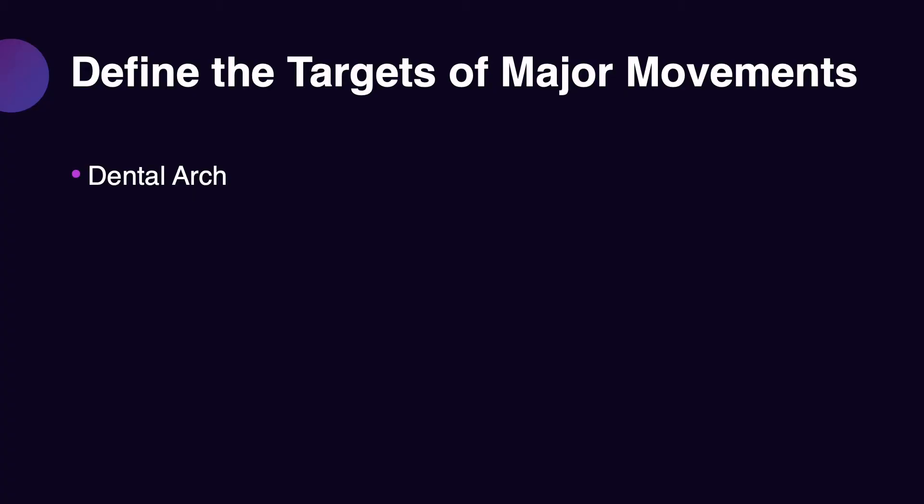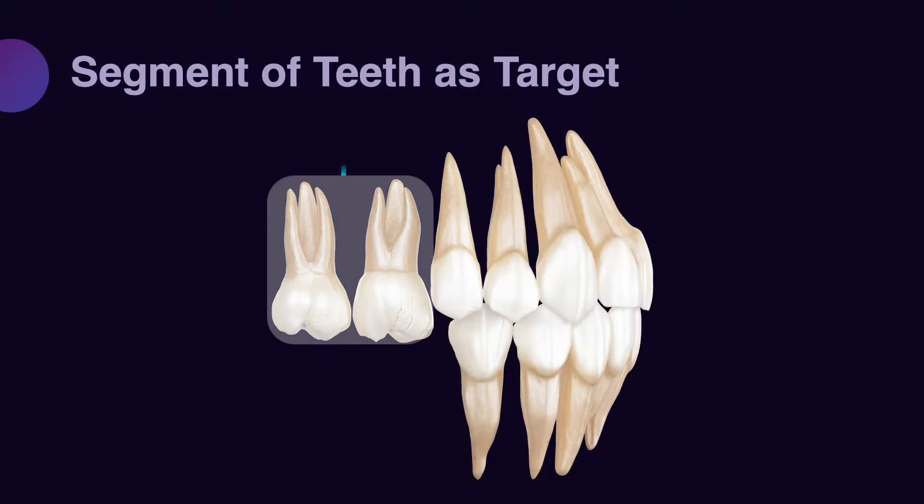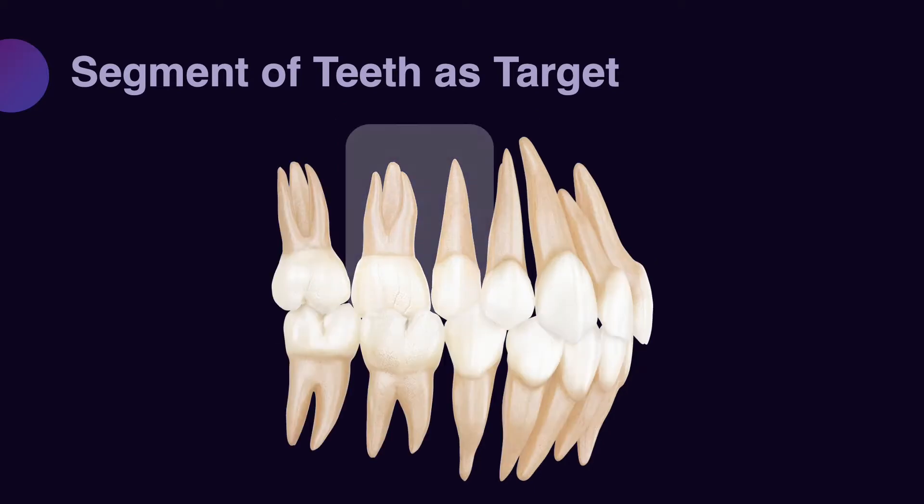The second target that may require major movement is a segment of the teeth. Anytime that several teeth have a similar problem, they make a segment. These segments may need to be moved vertically, in a transverse plane, or in a sagittal plane. Sometimes segments, similar to the dental arch, may require movement in all three dimensions. It is wiser to recognize the movement in each dimension separately and design mechanics for each dimension separately. Combining them may be too risky.